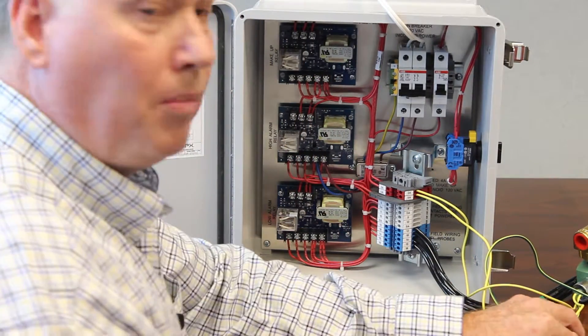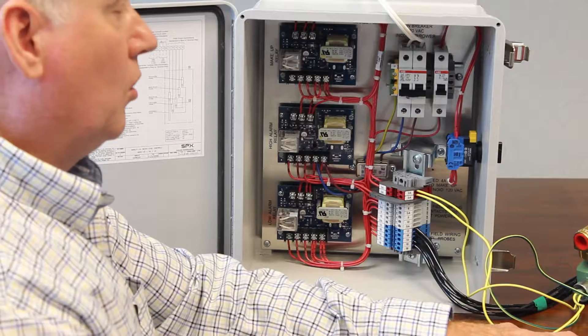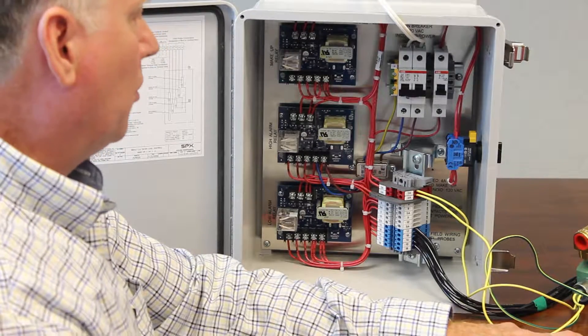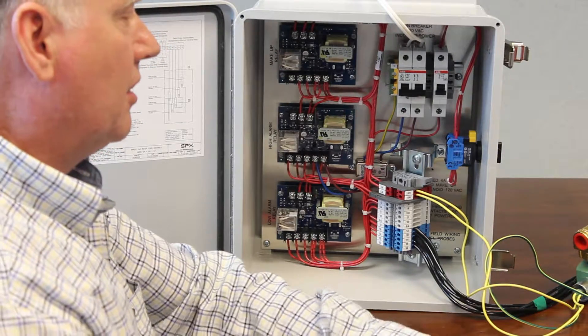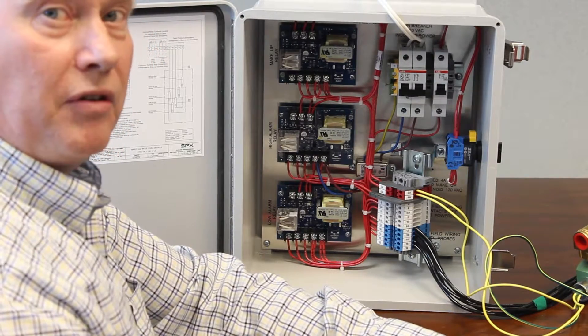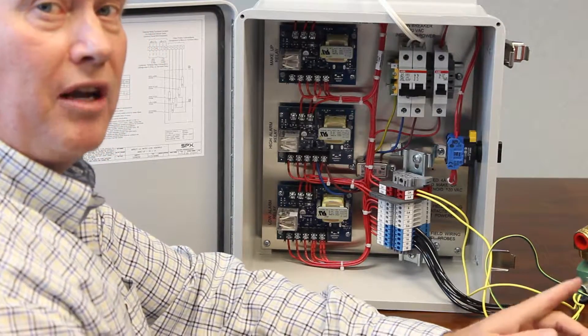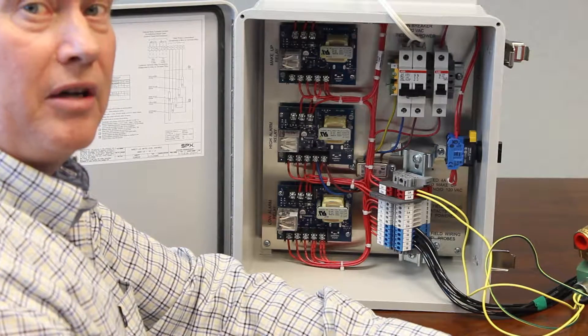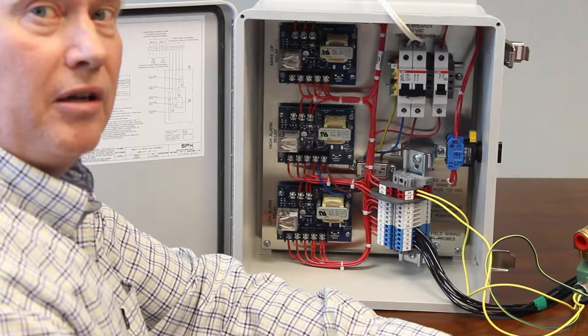So now that my probes are back in the circuit, we're going to do what we did earlier and that is simulate a water condition. Now if you have water in the basin of your tower, you can simply raise and lower the probes up and down simulating what we just did with the wire jumper.